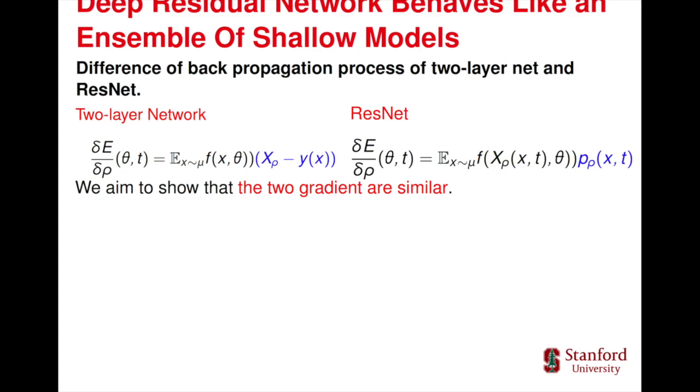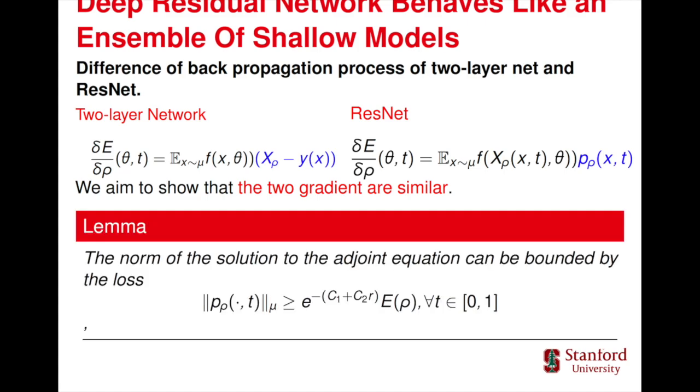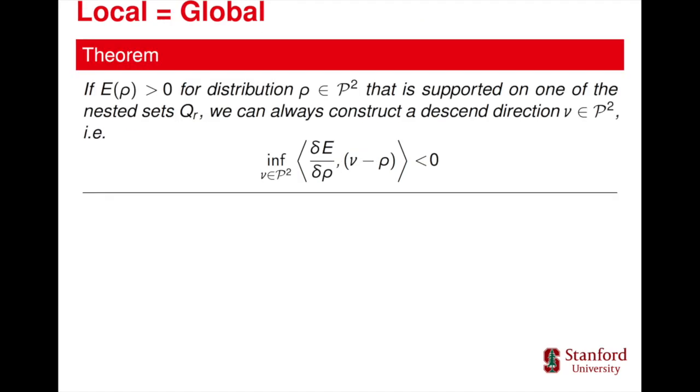If we can bound the difference brought by the adjoint equation, we can say that the two gradients are similar. Thus we can have every local minimizer as global in L2 space.